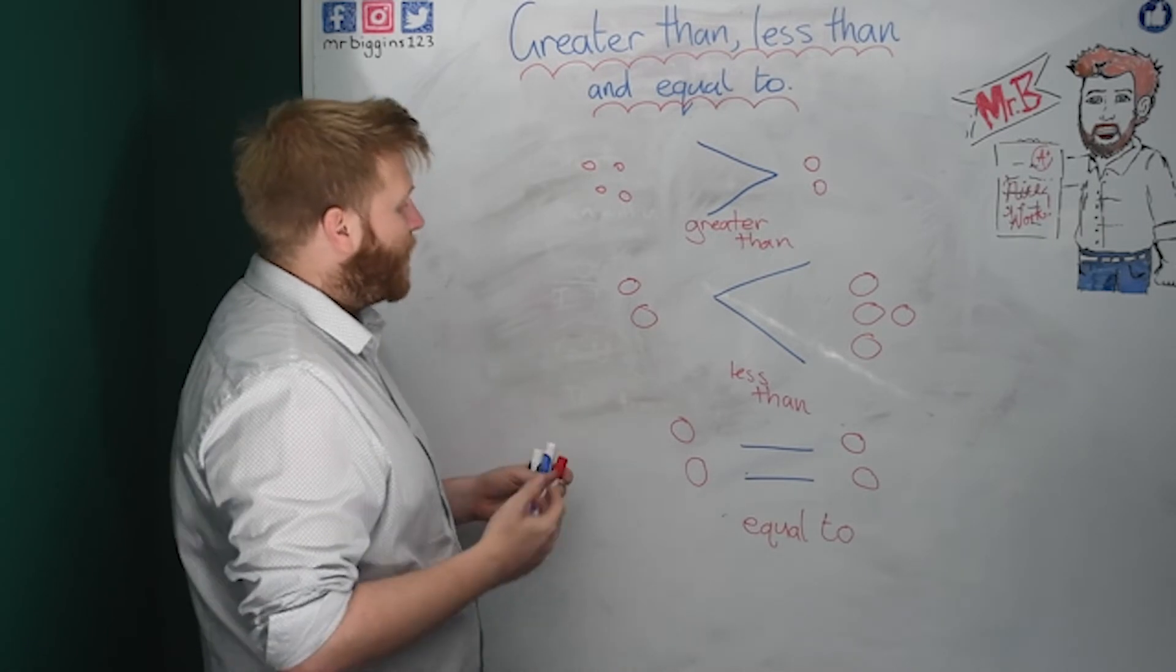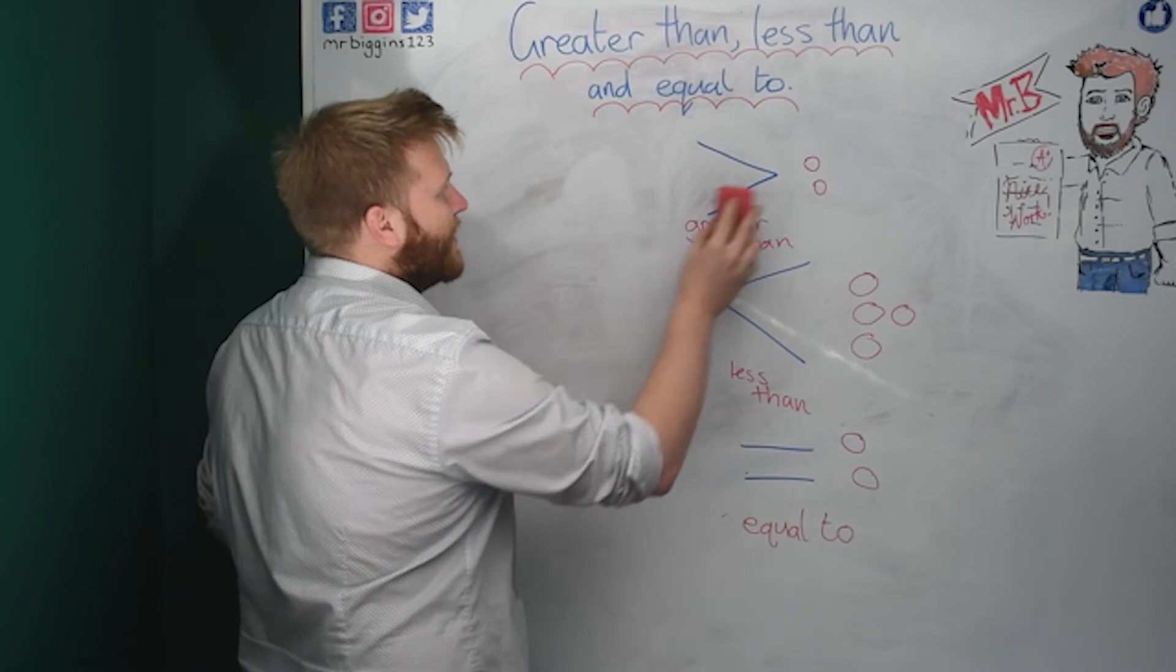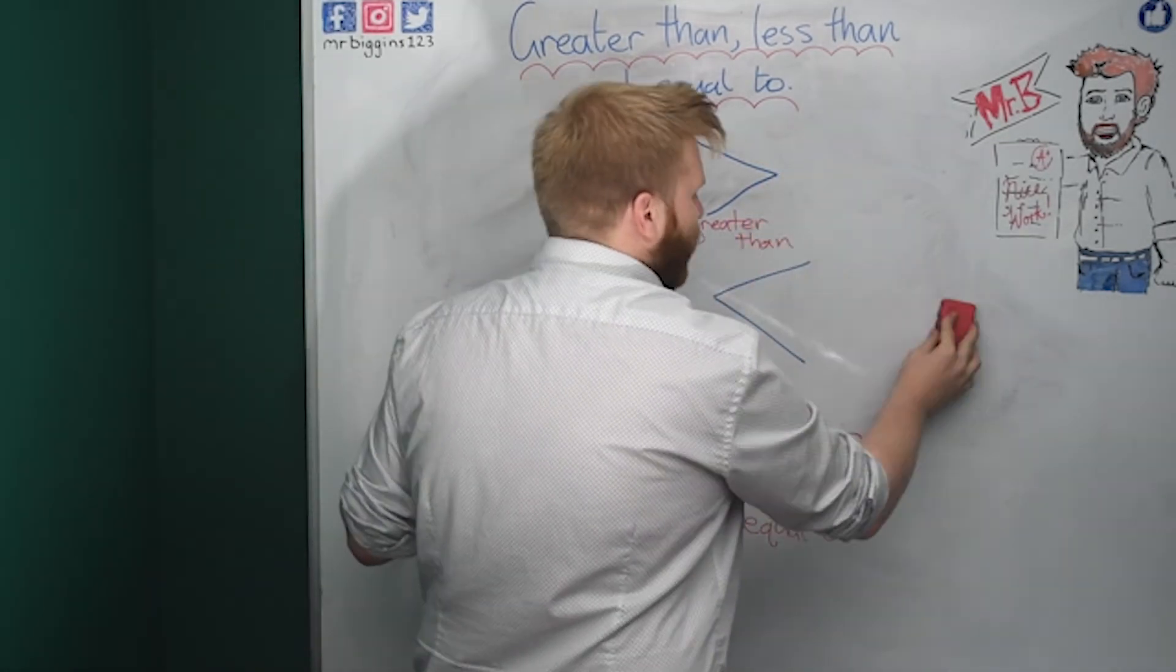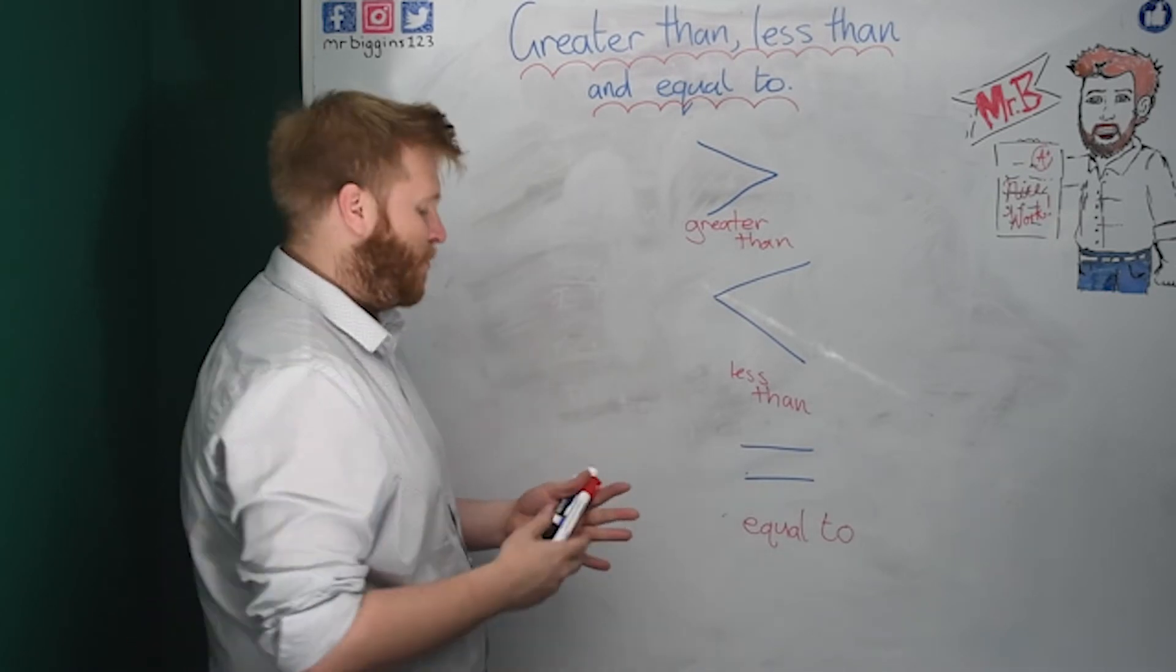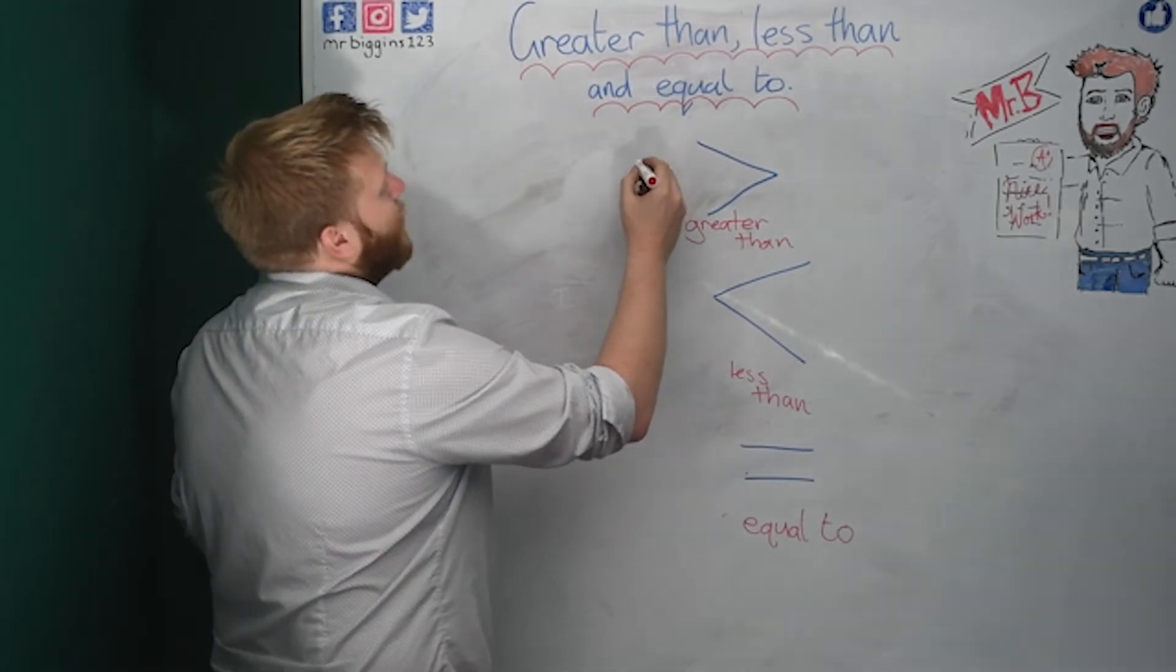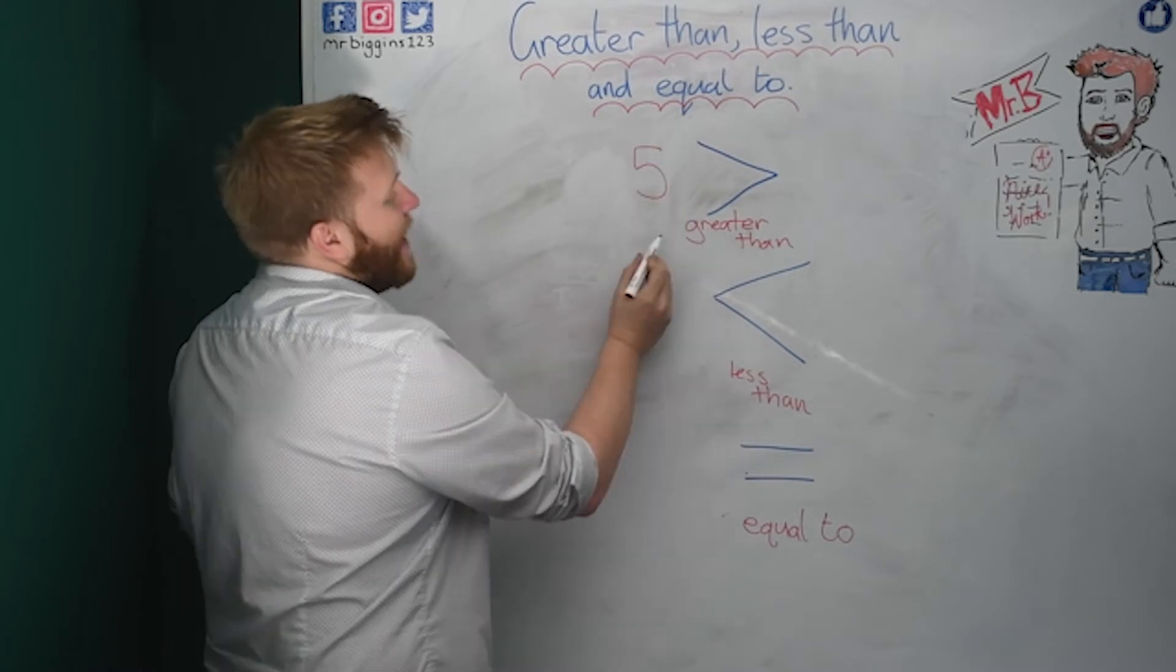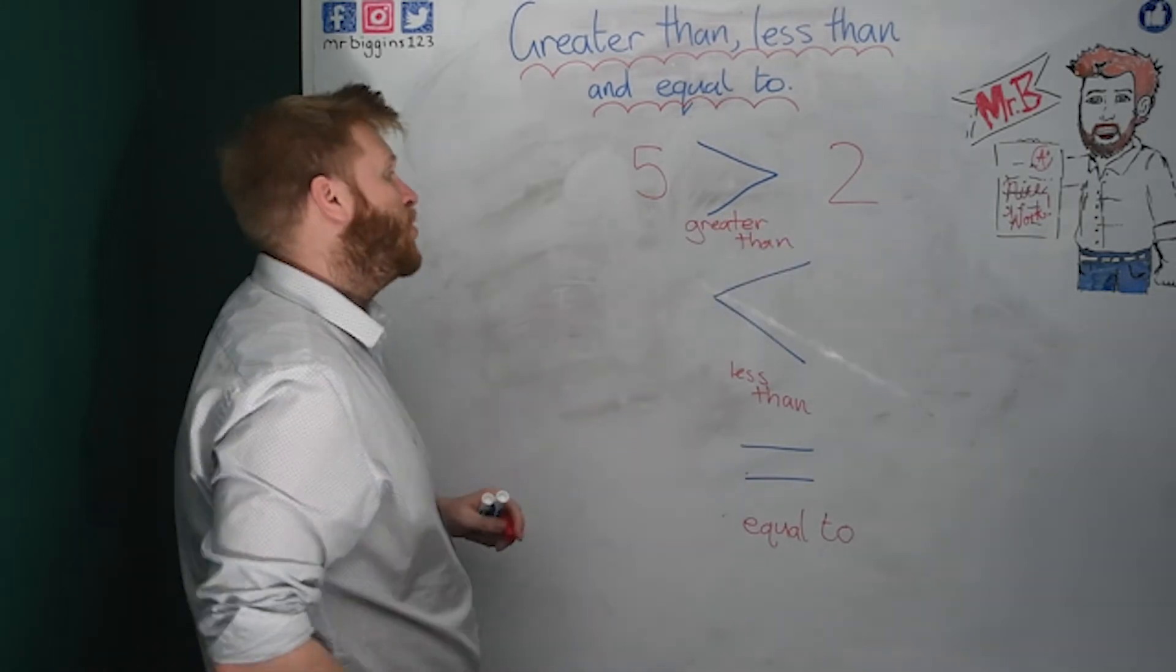So now we know what I mean when I say greater than, less than, or equal to. We can see if you've got groups of things like counters, or toys, or sports equipment, or anything, we can see groups. But we can also do it with numbers. So I could say that the number five is greater than the number two. And I'm saying five is bigger than two.